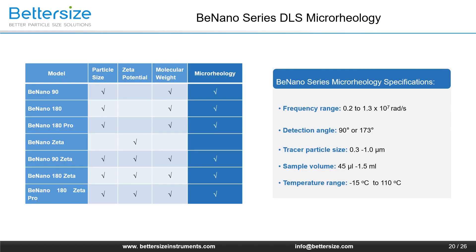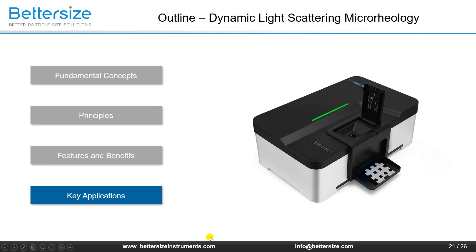DLS microrheology is available on the B-nano series instruments except the B-nano Zeta. Specifications include: frequency range from 0.2 to 13 billion radians per second, detection angle of 90 or 173 degrees, tracer particle size from 0.3 to 1 micrometer, sample volume from 45 microliters to 1.5 milliliters, and temperature range from minus 15 to 110 degrees Celsius.